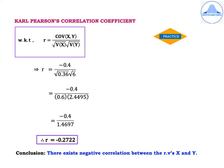Now we have covariance of x comma y, V of x, and V of y to find Karl Pearson's correlation coefficient. The formula is r equals covariance of x comma y divided by root variance of x times root variance of y. So r equals minus 0.4 divided by root 0.36 times root 6, which is minus 0.4 divided by 0.6 times 2.4495, giving minus 0.4 divided by 1.4697. Therefore r equals minus 0.2722. Conclusion: there exists negative correlation between the random variables x and y.